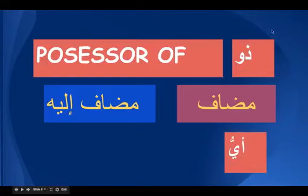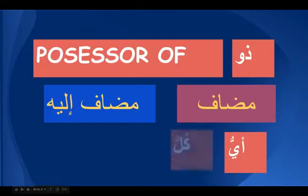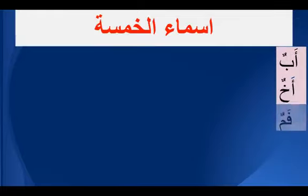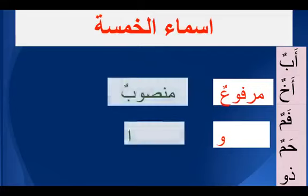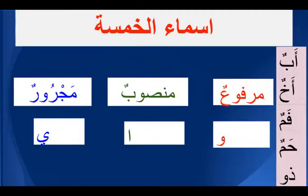Other nouns that always take a mudaf ilahi are ayyu and kullu, which we did in book one. Dhu is also among those. Additionally, dhu is among the asma'ul khamsa — the five special nouns: abun, akhun, famun, hamun, and dhu. The speciality of asma'ul khamsa is that when marfu and mudaf, the sign of raf is waw; the sign of nasb is alif; and the sign of jarr is ya. Because dhu is always mudaf, you will always see waw as the sign of raf and alif as the sign of nasb.